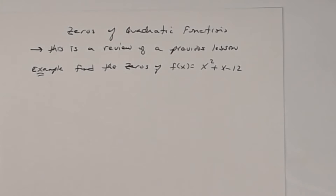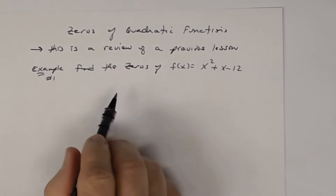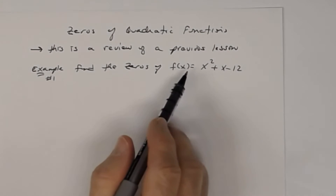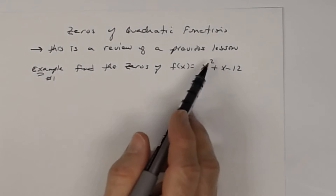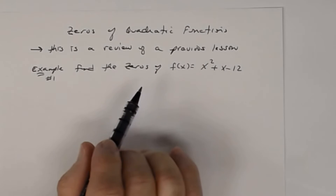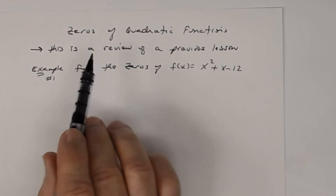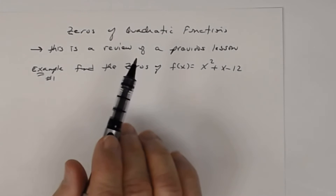In this lesson, we're going to — and this is a review — look at zeros of quadratic functions. This is a review of a previous lesson. Let's find the zeros of this quadratic function. All our examples will be quadratic in this particular case, and this is going to lead us to some other ideas in terms of zeros of polynomial functions.